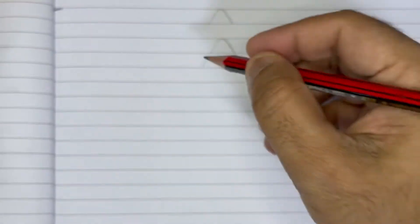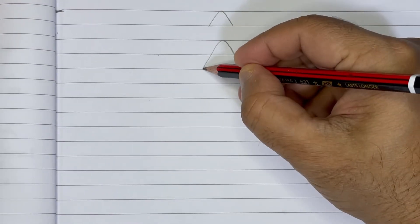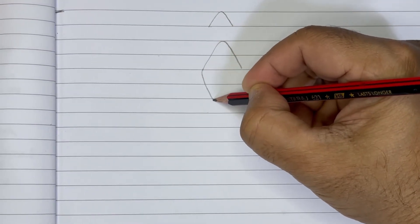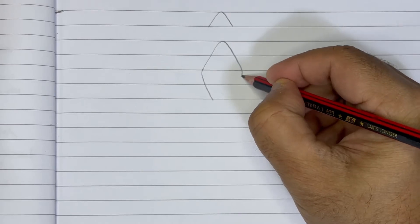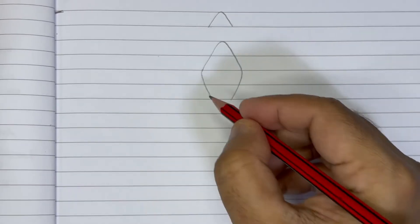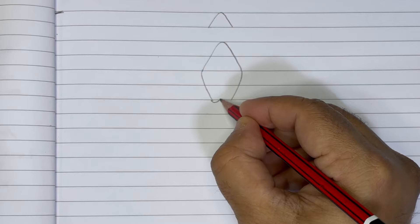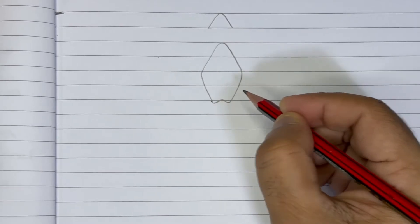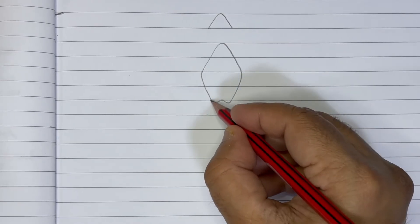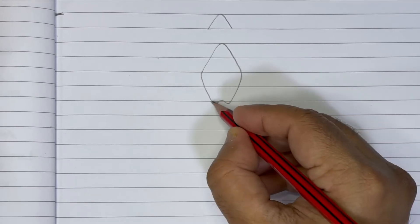After that we will make this shape in the bottom. Just try to make it like a W shape. You must have noticed that shape.